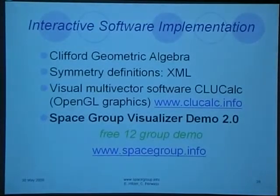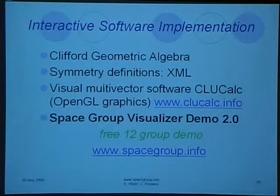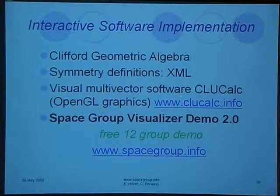The interactive visualization software uses Clifford Geometric Algebra. After defining these products, we use XML files to input the information about the vectors, the angles, and the products of the vectors. Then we use the visual multi-vector software ClueCalc, which is free software and uses OpenGL graphics, and you can download it here. Our Space Group visualizer script is based on ClueCalc, and you can download a free demo with a dozen groups from our homepage.